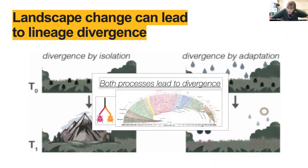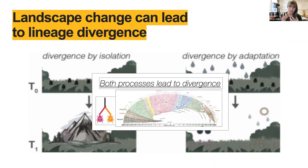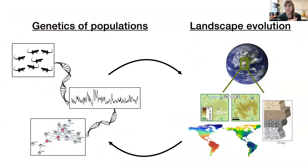What's important to recognize is that both of these processes can lead to divergence or the formation of new lineages, but what's different is the earth process that's responsible for shaping that divergence.